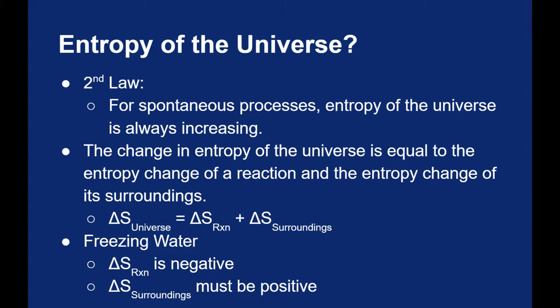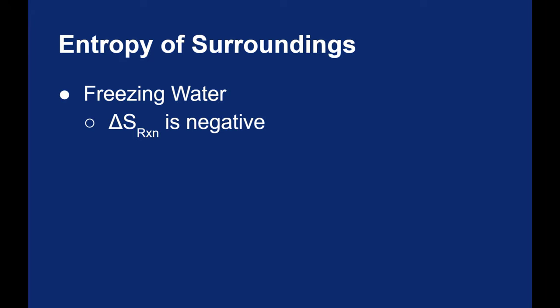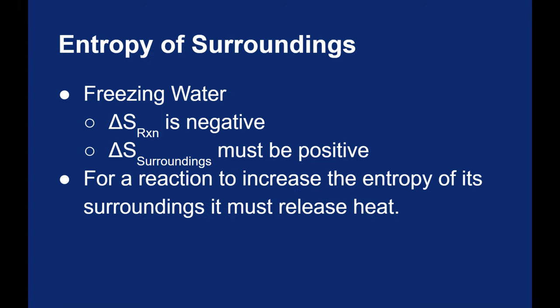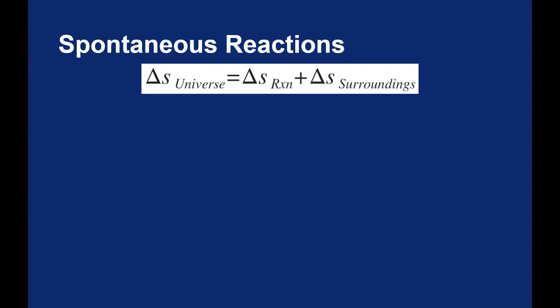The delta S of the universe actually depends on the reaction and the surroundings. There is a temperature dependence that comes into this — sometimes water freezes and sometimes it doesn't, depending on the temperature. Freezing water is becoming less random, so the delta S of the reaction is negative. But in order for water to freeze, the delta S of the surroundings must be positive — that's the only way. Saying that the delta S of the surroundings is positive is the same thing as saying that a reaction is exothermic. A negative delta H value for a reaction will give you a positive delta S value for your surroundings.